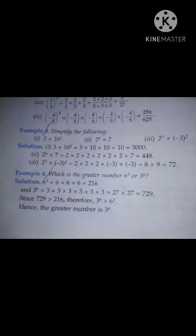Example 3, simplify the following. First part is 3 into 10 to the power 3. So, 3 multiplied by 10 into 10 into 10. The answer is 3000.